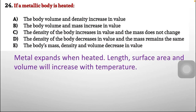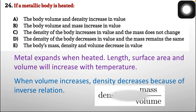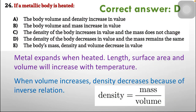When a metal expands due to heating, its surface area and volume increase with temperature. Density decreases because of the inverse relation: density equals mass over volume, and as volume increases, density decreases. So the correct option is D — the density of the body decreases in value and the mass remains the same.